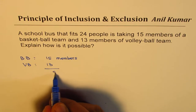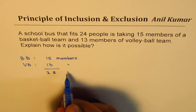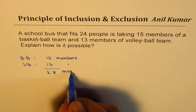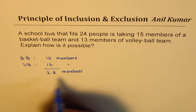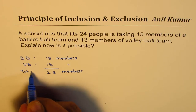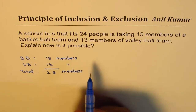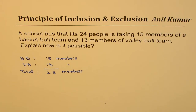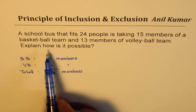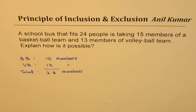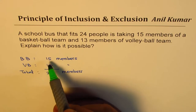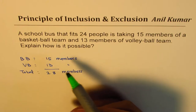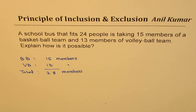If you add them up, you get 5 plus 3 is 8, 1 plus 1 is 2 — so 28 members total. They are all going in a bus which can actually take 24 people. The question is, explain how is it possible? Think about it. It's kind of obvious — there could be some players which are common to both.